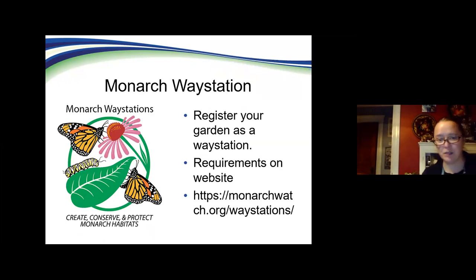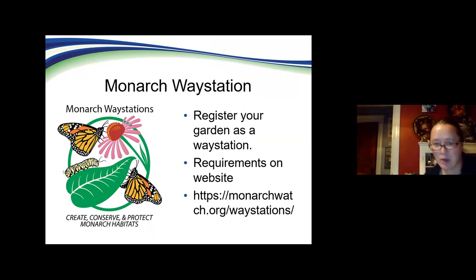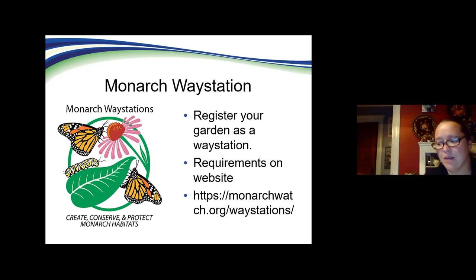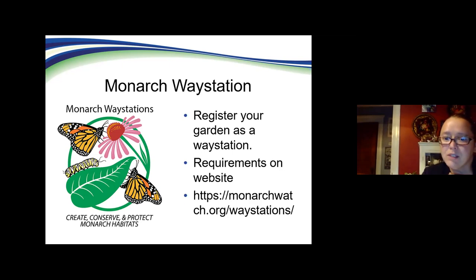Once you've done all this work, you want to show it off. Here are some resources to help you along the way. One is the Monarch Waystation program — in Covington, the mayor has made it a Monarch Waystation city because it has so many different waystations. If you go to their site, you can see a list of requirements, get yourself a plaque, and also speak to other people about building pollinator gardens.